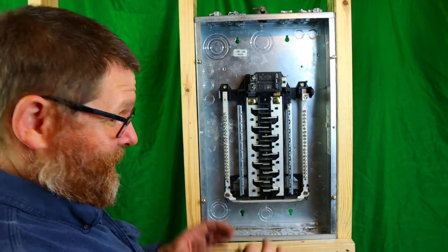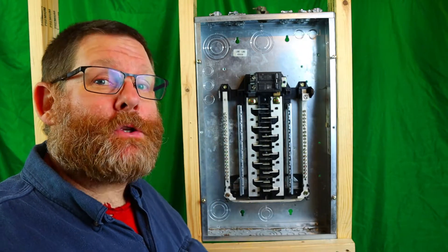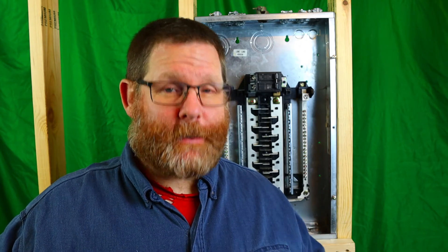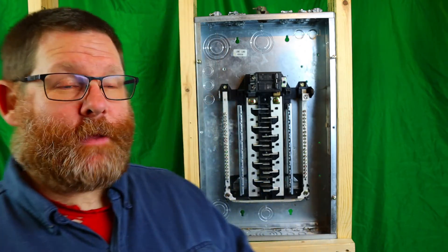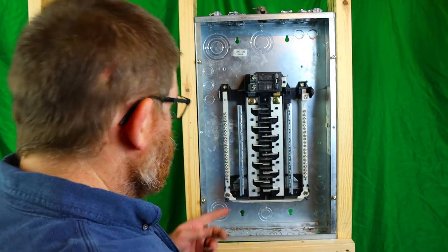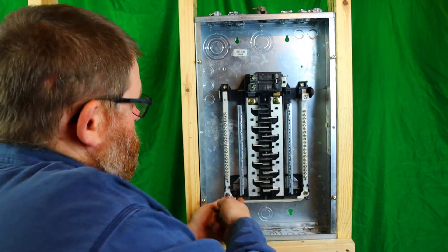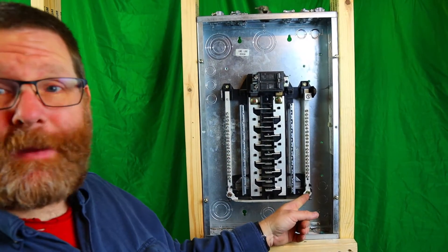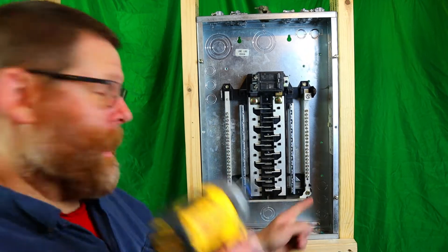But now for this, this is where it matters - you have to separate at your sub-panel. Now I'm going to show you how to do that right now. There's no green ground screw in there. You have to take this right here off, you have to remove that.